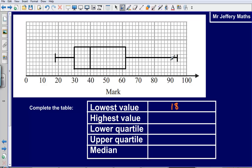The highest value, that's at, well, 90's here, 92, 94. The lower quartile, that's where the box begins. The box begins at 30.